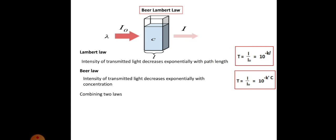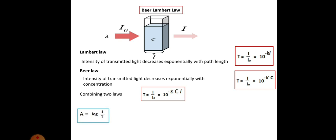Combining these two laws, we can state that the intensity of transmitted light decreases exponentially with both path length and concentration. T is expressed as: T = I/I₀ = 10^(−εCL). The constants K and K' are combined and taken as ε, which is the molar absorption coefficient.